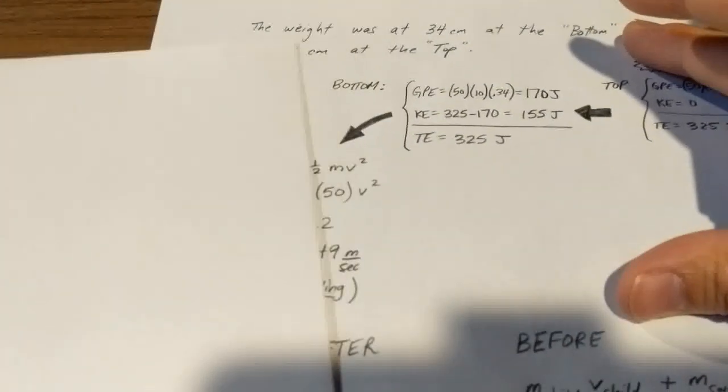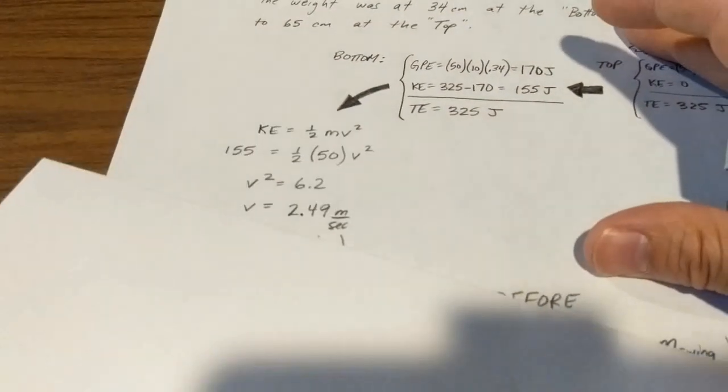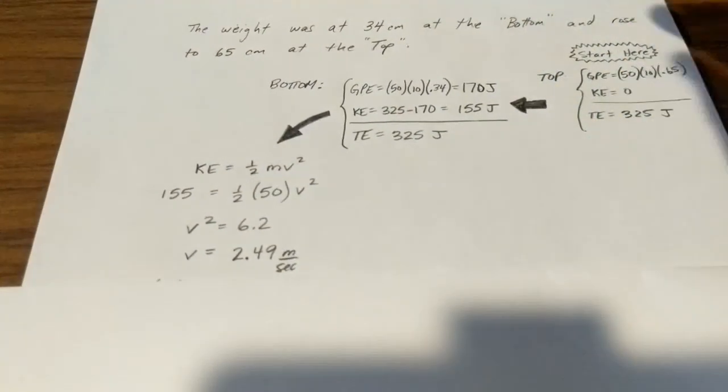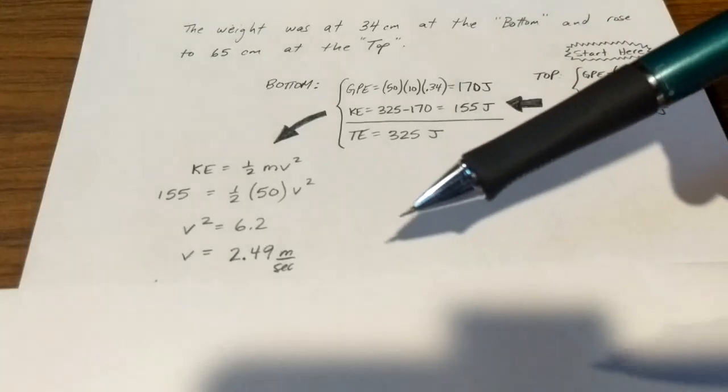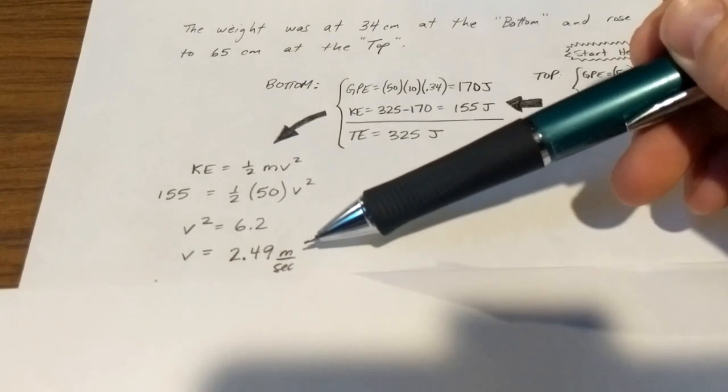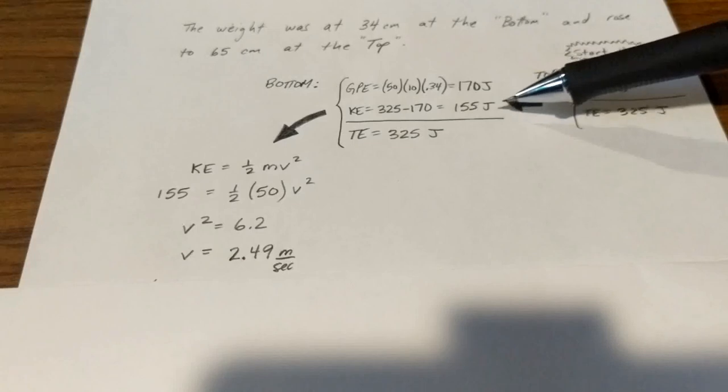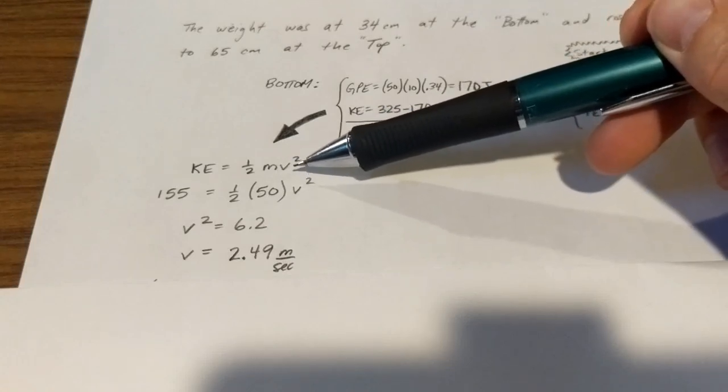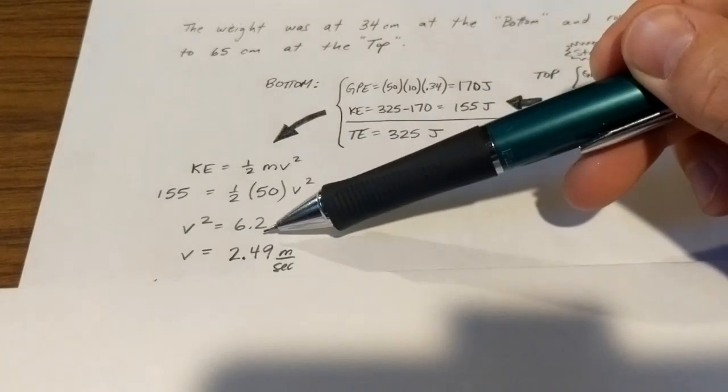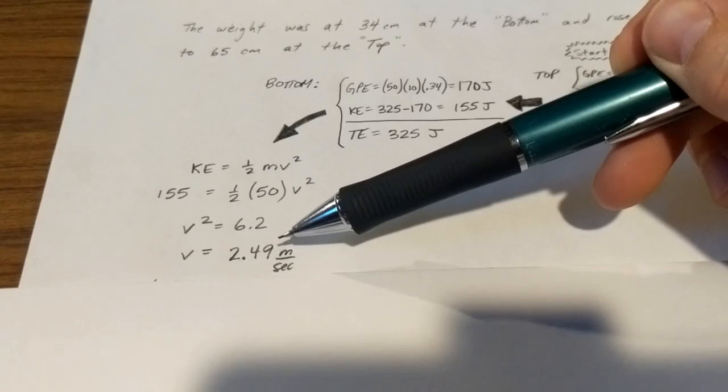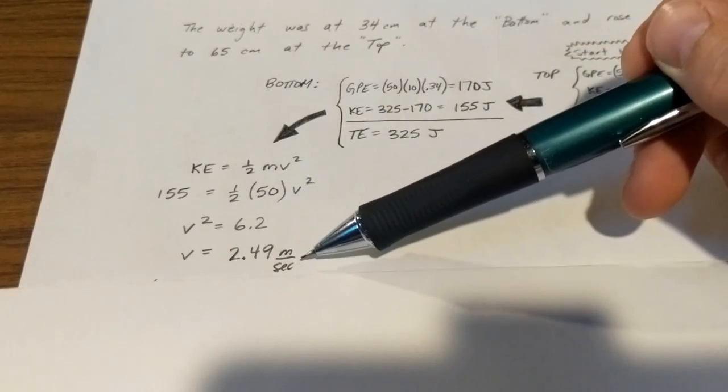If we continue with this, we can know that at the instant that he jumped onto the swing, his and the swing's velocity must have been almost 2.5 meters per second. And the way that we know this is because this 155 joules of kinetic energy is a result of his mass and the swing's mass moving at whatever speed they were. So here that is worked out, and we end up with a speed for the coupled child and swing of 2.5 meters per second.